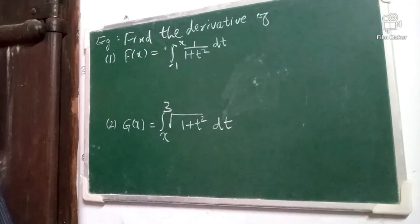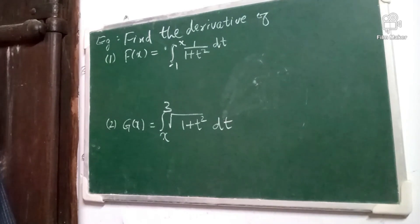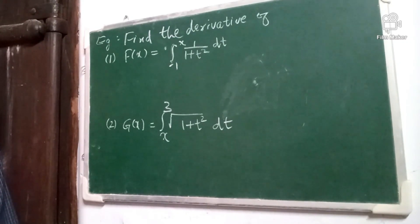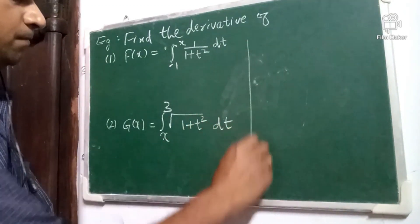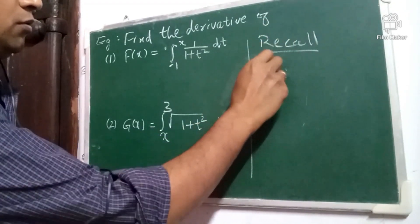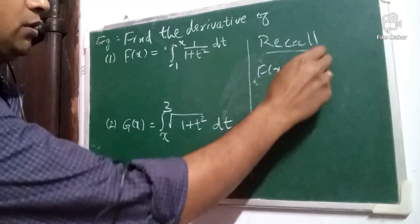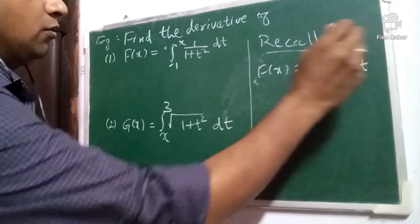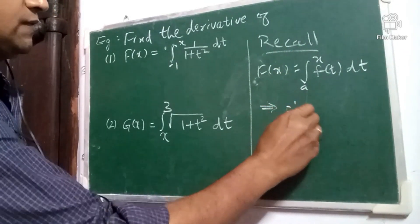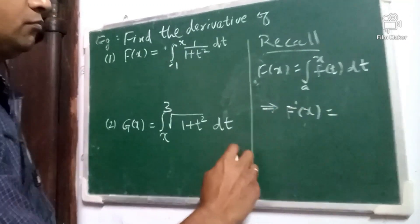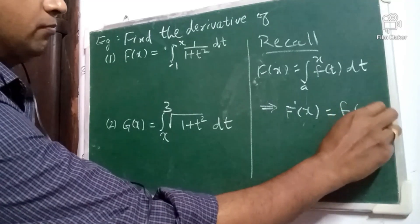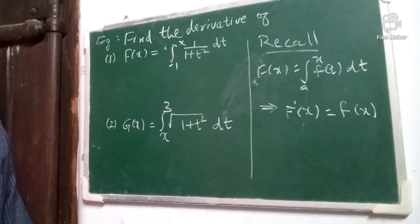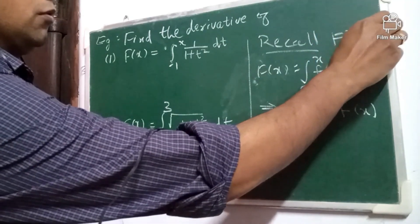Next, we shall do some problems related to the fundamental theorem of calculus. The first problem is: find the derivative of F(x) = ∫₋₁ˣ 1/(1+t²) dt. Remember what the fundamental theorem of calculus states: if F(x) = ∫ₐˣ f(t) dt, then F'(x) is the value of the integrand at the upper limit. This is the fundamental theorem of calculus, Version 1.